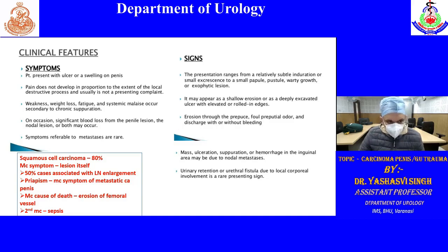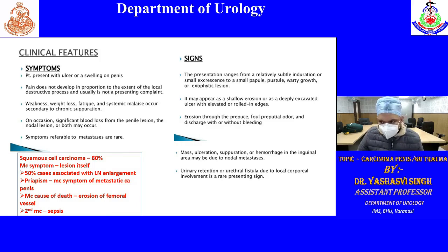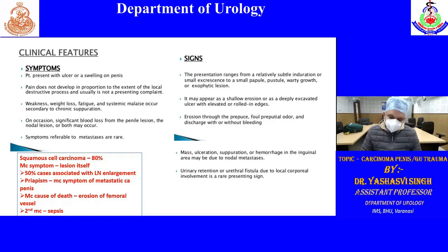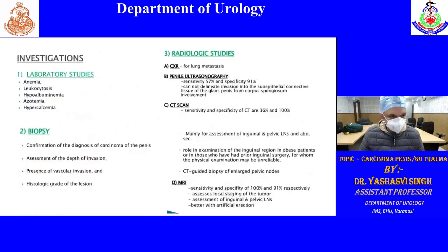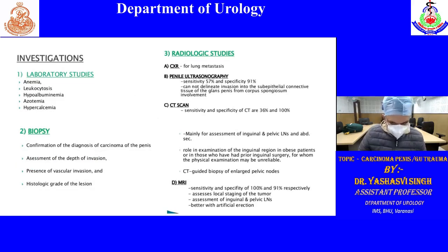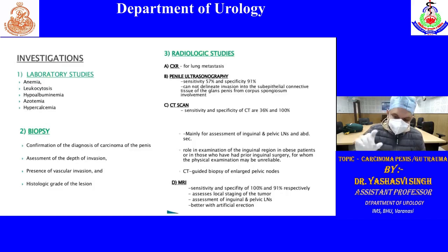Signs may include a small papule, pustule, or ulcerative lesion. Erosion and infection are common. Urinary symptoms can occur due to urethral involvement. MRI is the gold standard investigation for assessing depth of CA penis. CT scan is best for assessing inguinal lymph nodes.